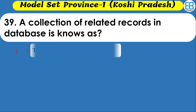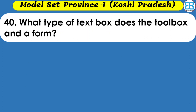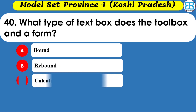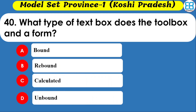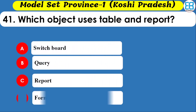A collection of related records in a database is known as what? Options are tables, database, and file. The correct option is file. What type of text box does the toolbox in a form contain? The toolbox in a form contains various types of boxes. Which object uses tables and reports? Options are switchboard, query, report, and forms.